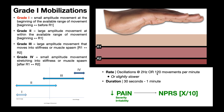For duration, you're going to usually start out anywhere between 30 seconds and a minute. When assessing a patient's response the very first time you do this, you want to start out on the lower end — maybe 30 seconds. If they can tolerate it really well and it helps them, then maybe gradually increase that to a minute. You might be able to do a couple or a few sets within one treatment session. That applies the same for grades one through four.